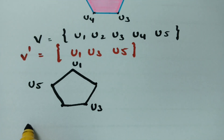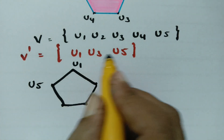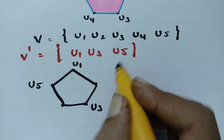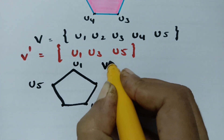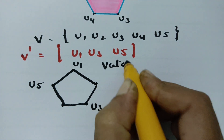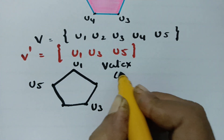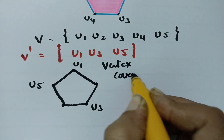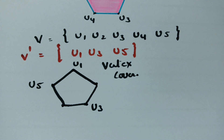So the set {U1, U3, U5} is a vertex cover.